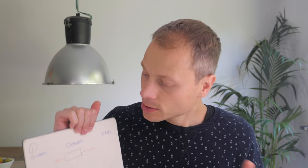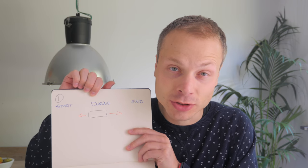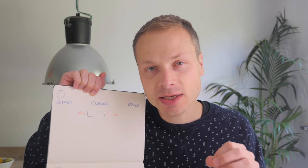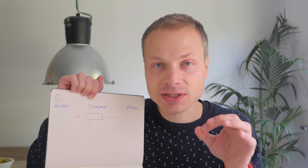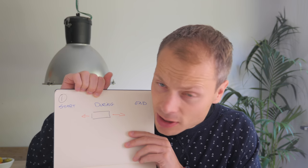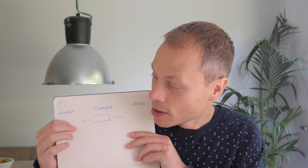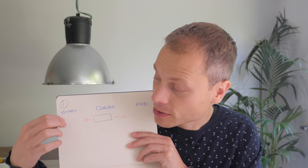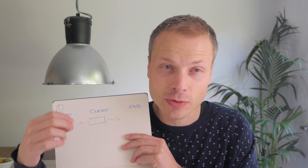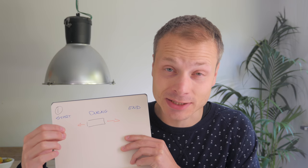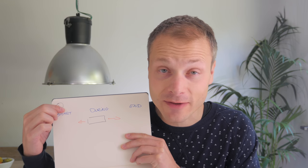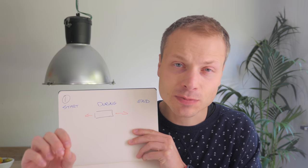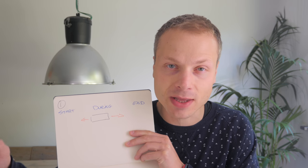I have two very pragmatic strategies to answer this question. My first approach is really simple and straightforward: start mapping the journey by looking at what's happening in the middle — the during phase. What is the moment your customer interacts with your company that you know for sure? Start with that moment and then just work your way out. Take five steps to the left and five steps to the right.